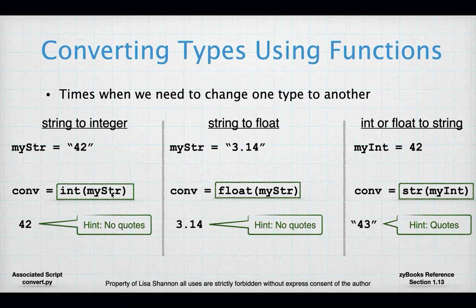I can also convert a string to a float — the function name is 'float', with an opening parenthesis, the argument, and closing parenthesis. That gives me the number 3.14, and I can use that in mathematical operations. Sometimes I need to convert an integer or float to a string using the 'str' function. You're going to use this a lot when you output things to the screen, because Python is very particular about mixing types on output — you have to convert most everything to a string.